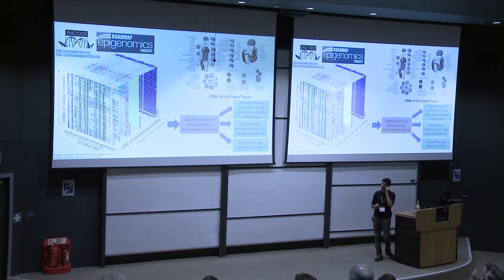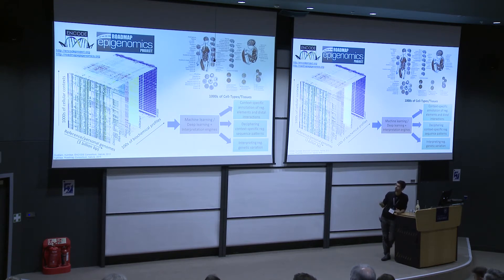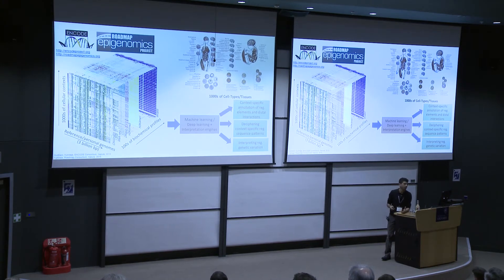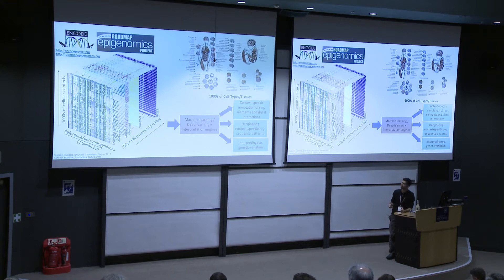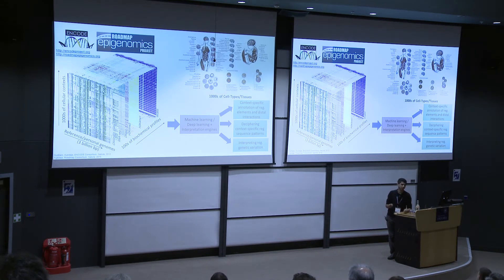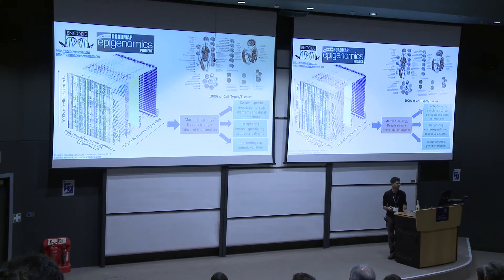Just to put things in perspective, we've managed to collect pretty large reference data sets. This is a cartoon of the data from ENCODE and Roadmap. You've got thousands of cellular contexts, whole genome assays measuring hundreds of biochemical profiles, and functional genomics profiles. These data sets serve as a pretty nice, large compendia to train machine learning and deep learning models. Where I think these kinds of data sets are most useful is for context-specific regulatory annotation of the genome alongside distal interactions between these kinds of elements.